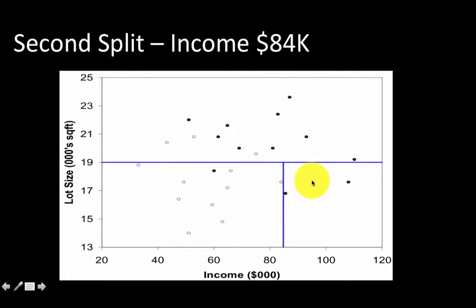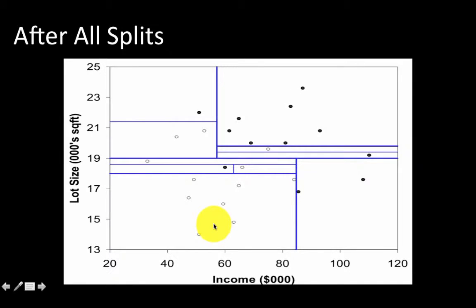We can see that this creates one pure node and one almost pure node. Now continuing in this fashion, after you do all the splits, the diagram actually looks like this. We saw the first split here, the second split here, possibly the third split here, the fourth split there, and so on.